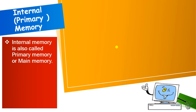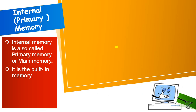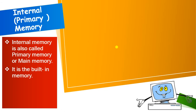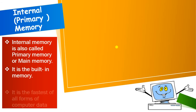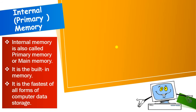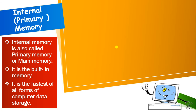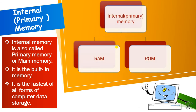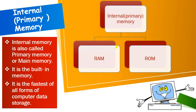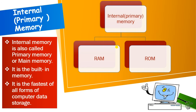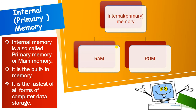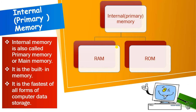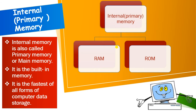Internal memory is also known as primary memory or main memory. It is built-in memory — this memory is present in the CPU. When you buy any computer, there is some memory present in it called primary memory or main memory. It is the fastest memory among all data storage — it is the fastest form of storing data. Internal memory has two types: RAM and ROM. We will discuss them in detail one by one.